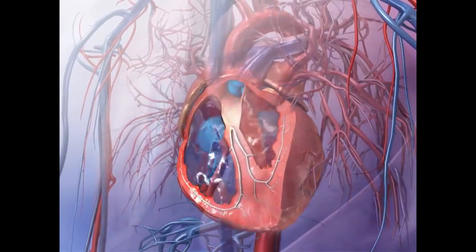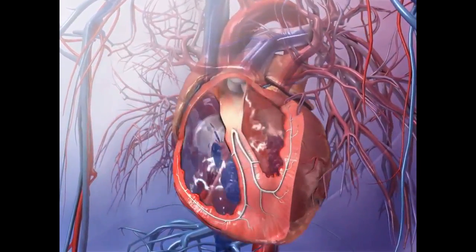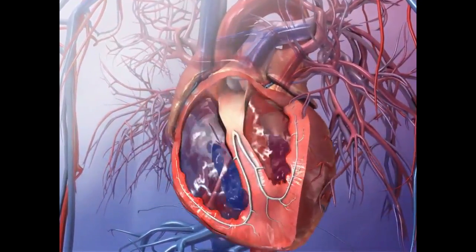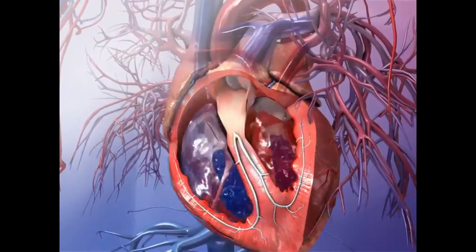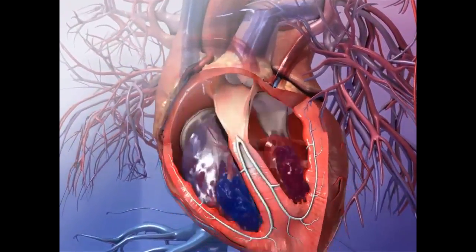The four heart valves control the flow of blood through the heart by opening and closing the heart chambers in a coordinated sequence.